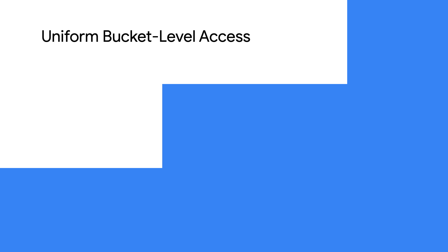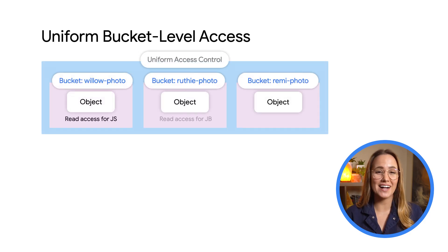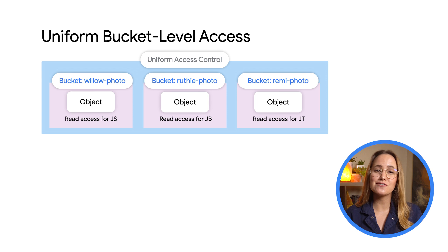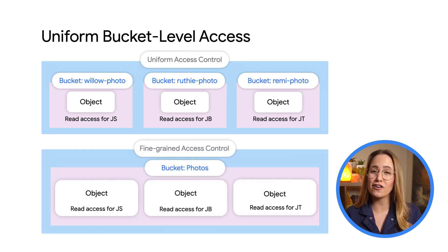When you first create a bucket, you'll need to decide whether you want to apply permissions using uniform or fine-grained access. In general, we recommend using uniform bucket-level access. This method allows you to use IAM to manage all of your permissions for all of the objects in a bucket.